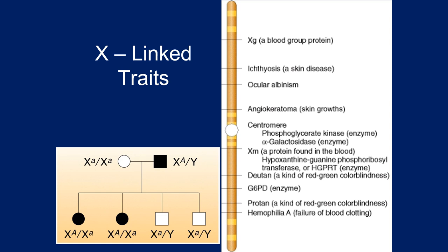Let's briefly discuss sex determination. In humans and other mammals, if you have two X chromosomes you're female; if you have an X and a Y, you're male. The Y chromosome has one key gene that tells the body to develop testes. The testes produce testosterone, which brings about the changes associated with maleness. Without a Y, the embryo develops into a female by default. The X chromosome is essential whether you're male or female — it contains close to a thousand genes.